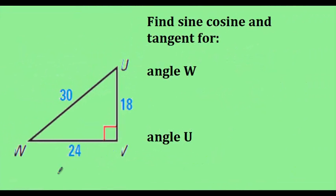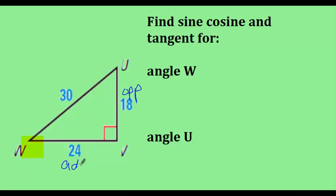It's important to note that these ratios change depending on what angle you're looking at. For angle W, the opposite side is 18, 24 is the adjacent side, and 30 is the hypotenuse.